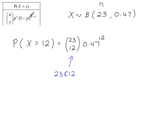Multiplied by 1 minus P, 1 minus 0.47 - that's P there - to the power of N minus X.